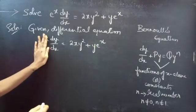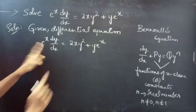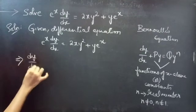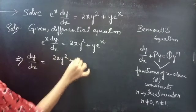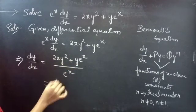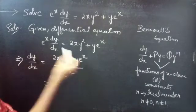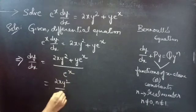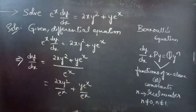Let's make the coefficient of dy/dx equal to 1. For that purpose, we will take e^x to the RHS. Then we get dy/dx equals 2xy² plus y·e^x divided by e^x. Since we have two terms in the numerator and one in the denominator, we split this into two terms: 2xy²/e^x plus y·e^x/e^x.